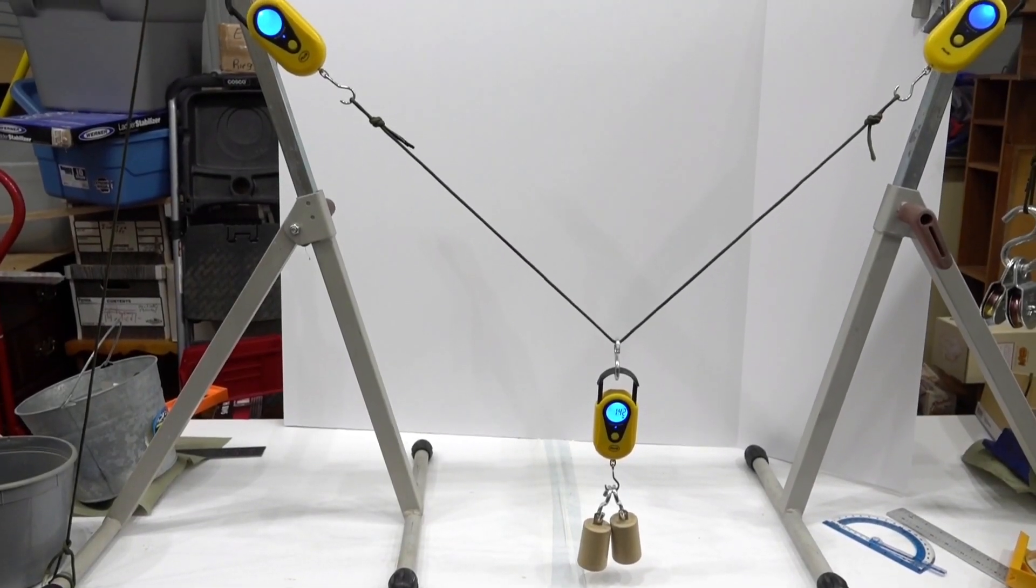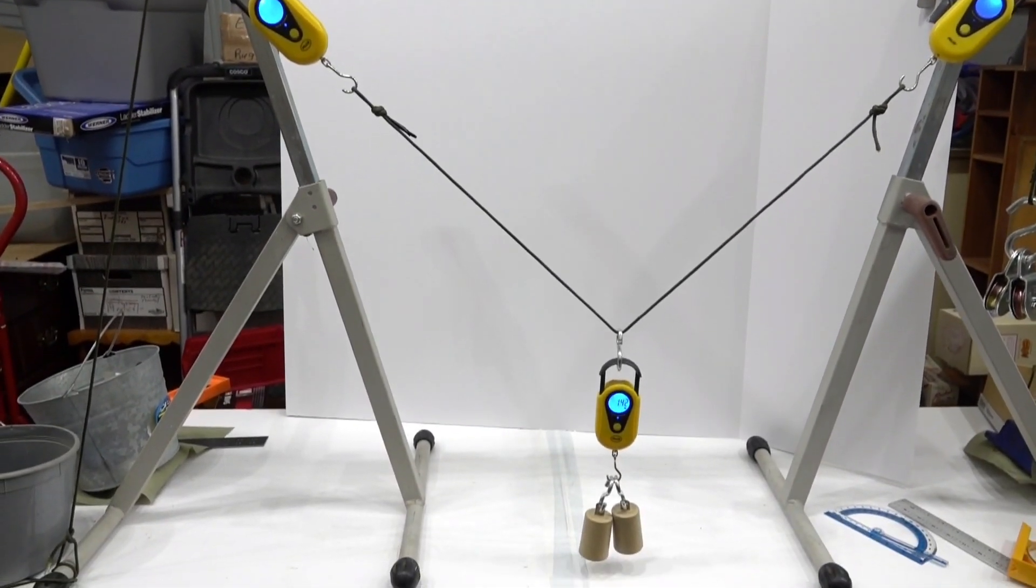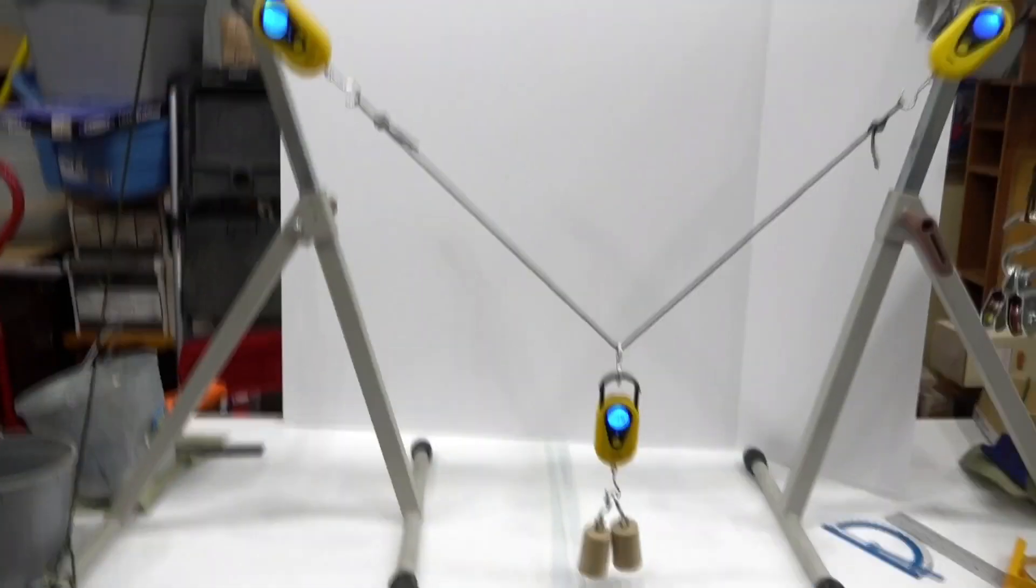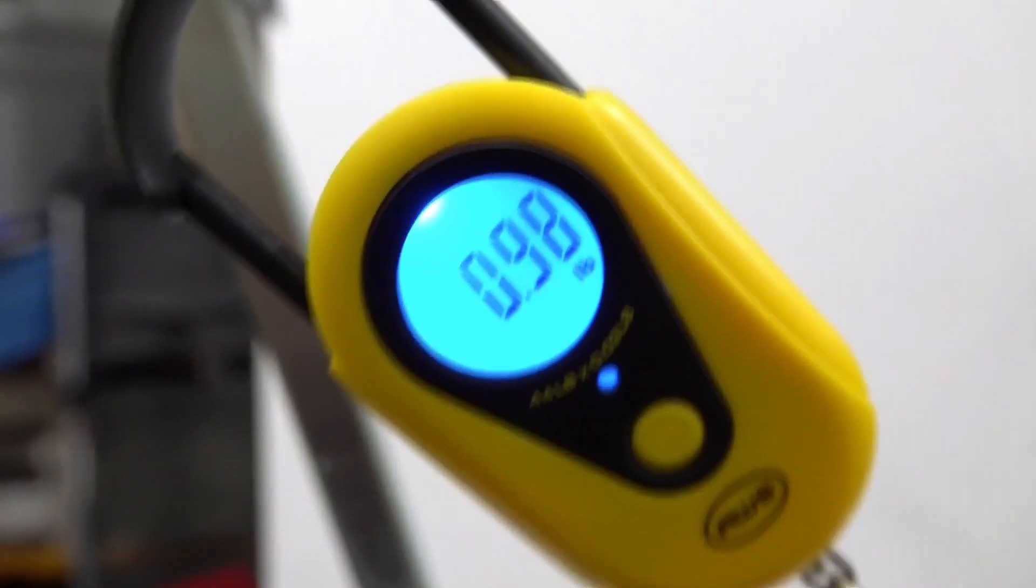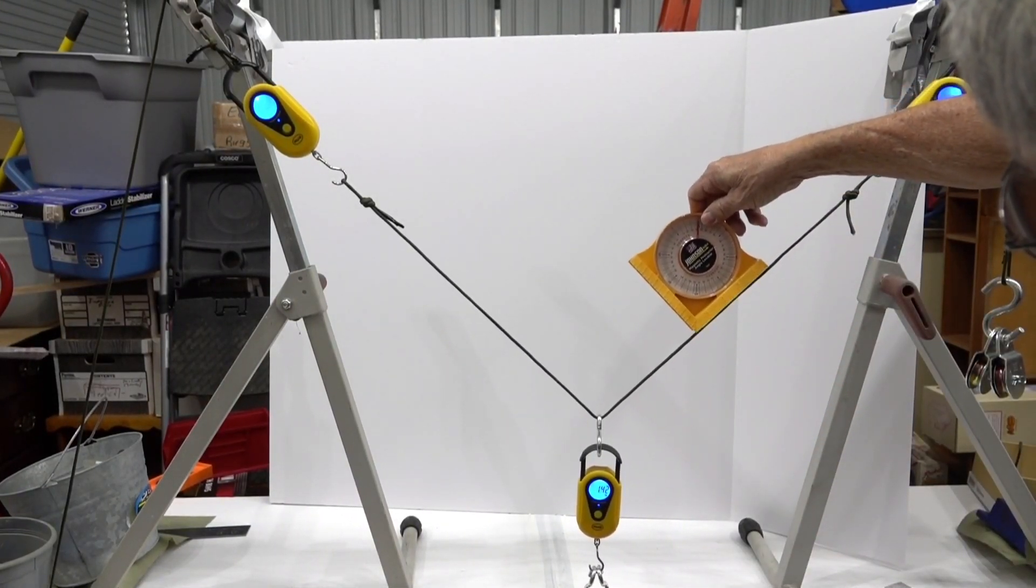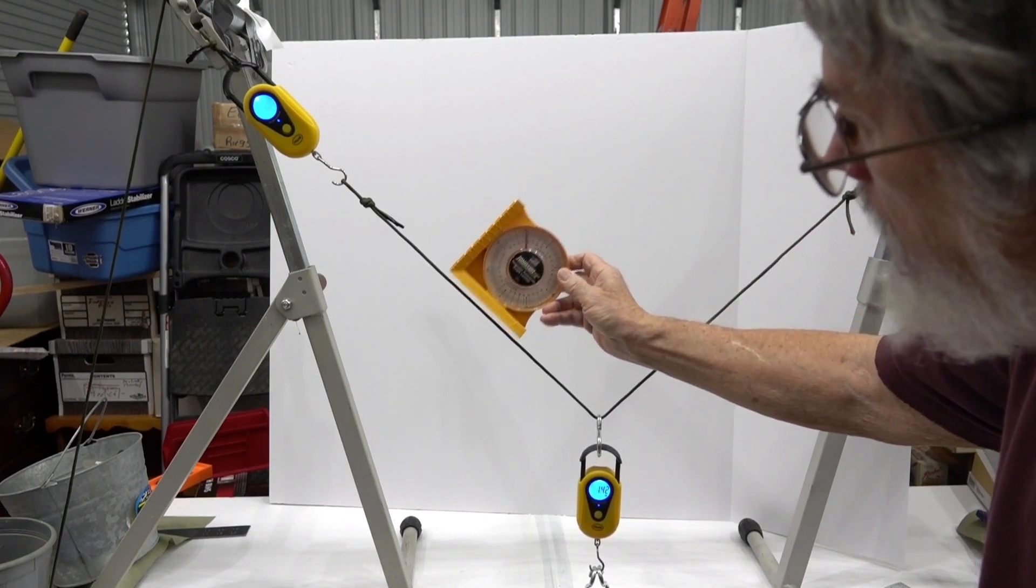Okay, we've changed our angle. Lengthened the paracord up there, so we get a much steeper angle. And I'll show you what we're reading here. We're reading 1.42 there, 1.02 there, 1.98 there. A little bit off. Let's see if we can affect that. This protractor here is reading right at 45.